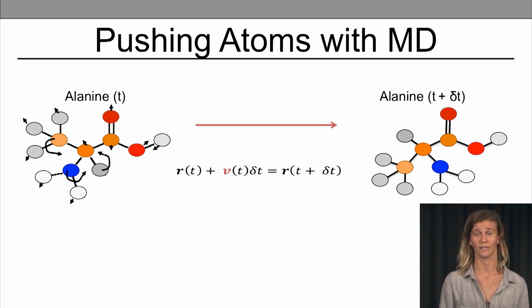Okay, so where do we get the velocities, or the V of T? That comes from taking the acceleration at time T, and multiplying that by the change in time, and adding that to the initial velocities.